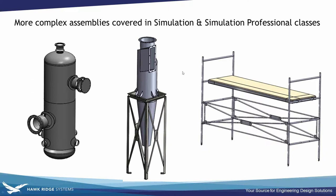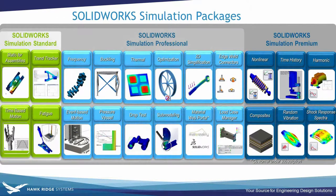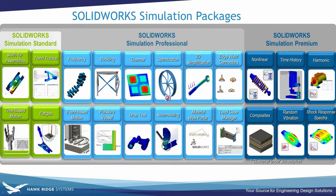SOLIDWORKS Premium gives you access to the linear static module. There are additional simulation capabilities in add-on packages. Simulation Professional adds thermal capability, vibration and buckling prediction, and a true optimization tool that automates the process of making design changes and rerunning studies to achieve a target. Simulation Premium adds non-linear capabilities for testing past yield or large deformations, and dynamic capabilities for things like shock testing. The linear static capability in SOLIDWORKS Premium covers probably 90% of what people need for these types of analyses.